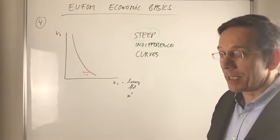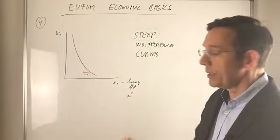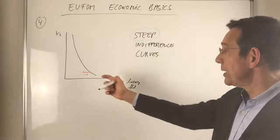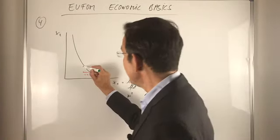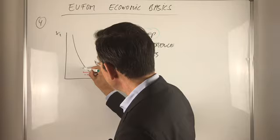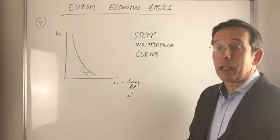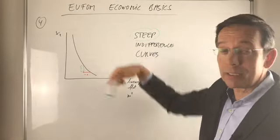How to see that? Now let's take away one unit, whatever that means, 10 square meters or so, one unit of x1. This individual, this household, has to be compensated by a lot of other goods in order to remain on the same utility level.